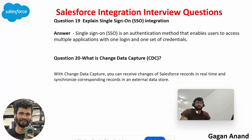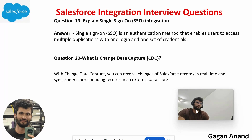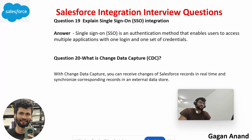Nineteenth question: explain Single Sign-On (SSO). SSO is a process where you use just one password or authentication method to access multiple applications. For example, using a Google account to log into Salesforce instead of using a separate Salesforce username and password — just click Single Sign-On, and it uses your Gmail credentials to let you into Salesforce.